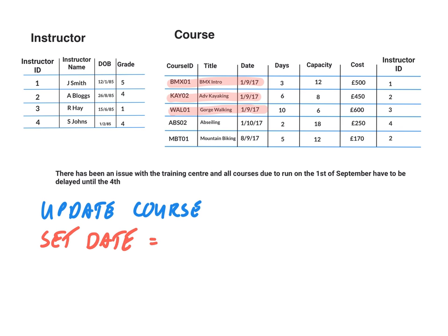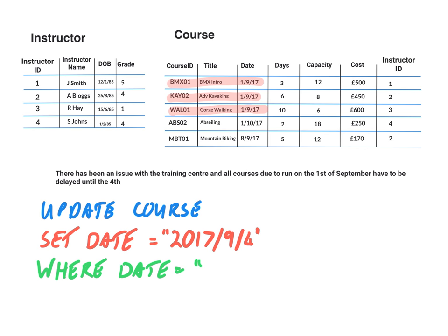We're going to set the date equal to — remember you put speech marks or apostrophes — so we're going to say the date equals 2017-12-11. The third part is the criteria specifying which records are changed, so we're going to say where the date equals 2017-12-09, and that should ensure that those three dates are changed.